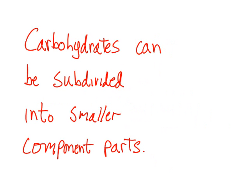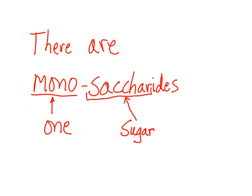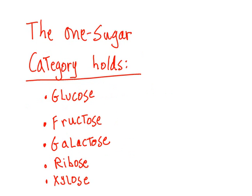Carbohydrates can be subdivided into smaller component parts. There are monosaccharides — mono meaning one, sacchar meaning sugar. The one-sugar category holds glucose, fructose, galactose, ribose, and xythose.